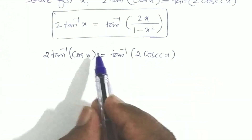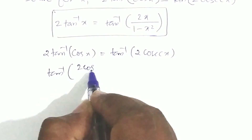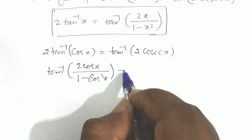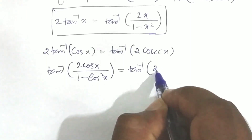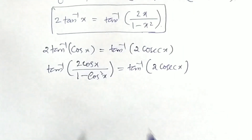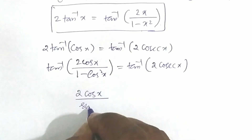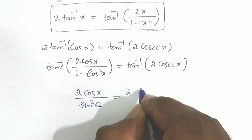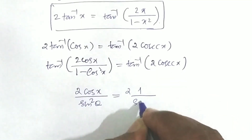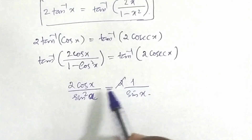Applying the formula, 2 tan inverse(cos x) becomes tan inverse of 2 cos x divided by (1 minus cos squared x). This equals tan inverse(2 cosec x). Since the tan inverse on both sides cancels, we have 2 cos x divided by (1 minus cos squared x) equals 2 cosec x, and cosec x equals 1/sin x.